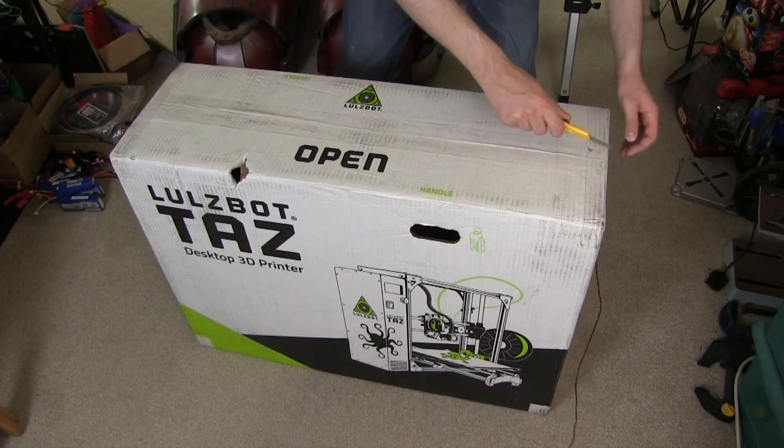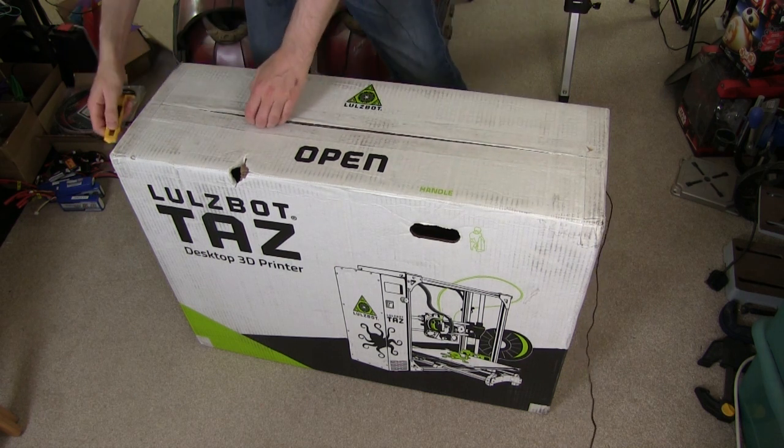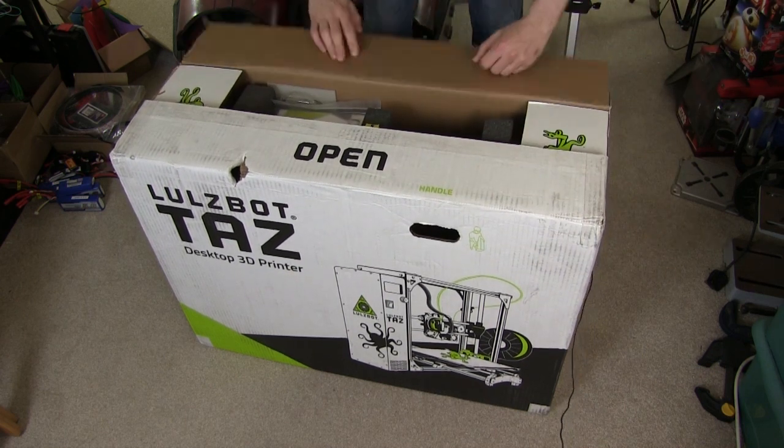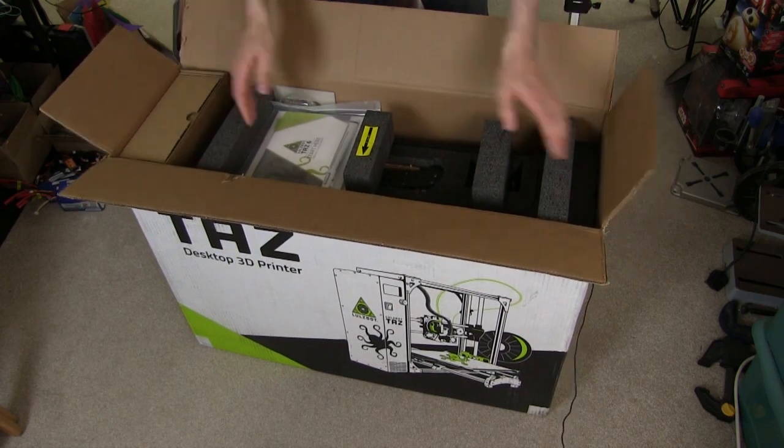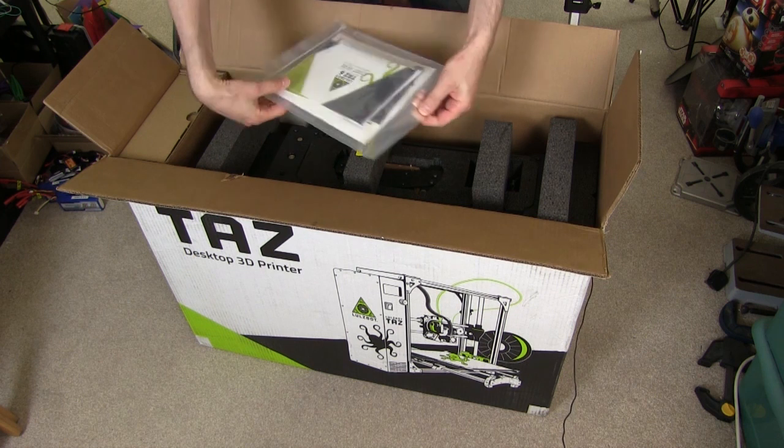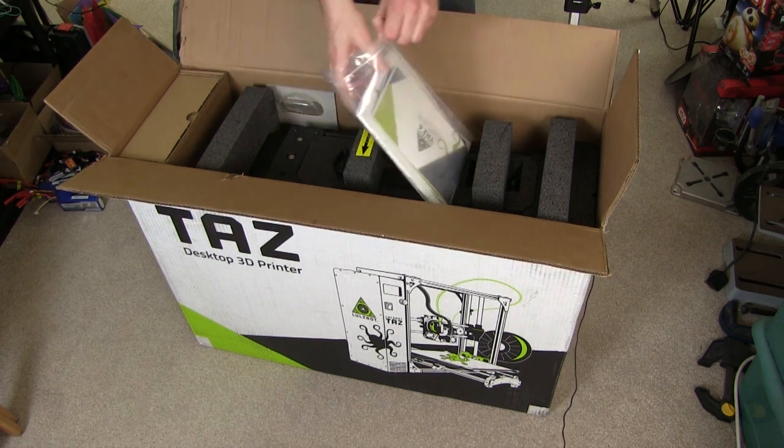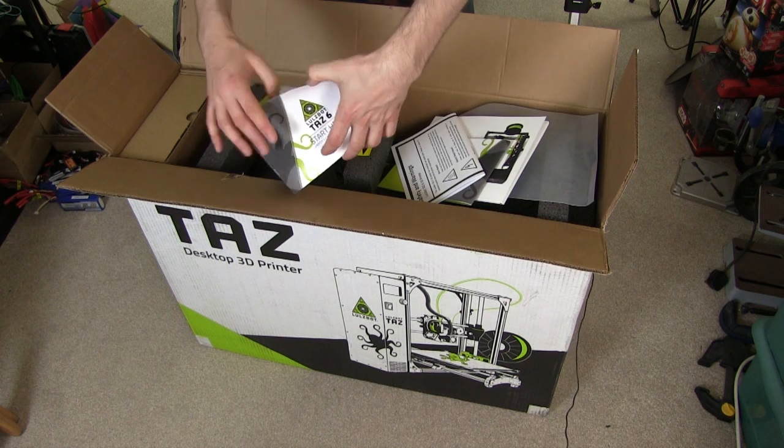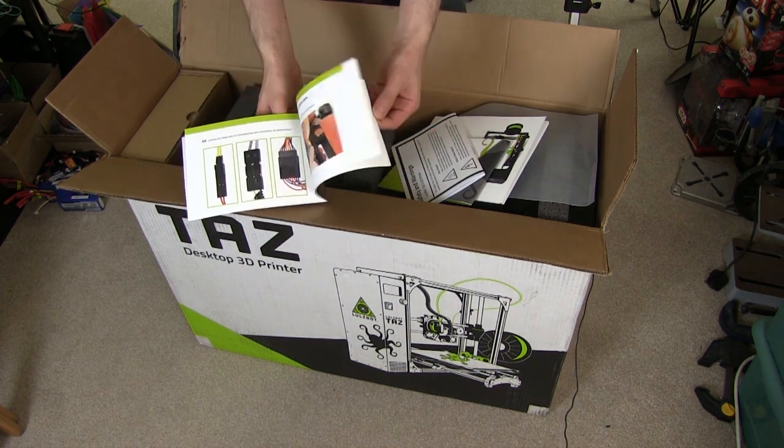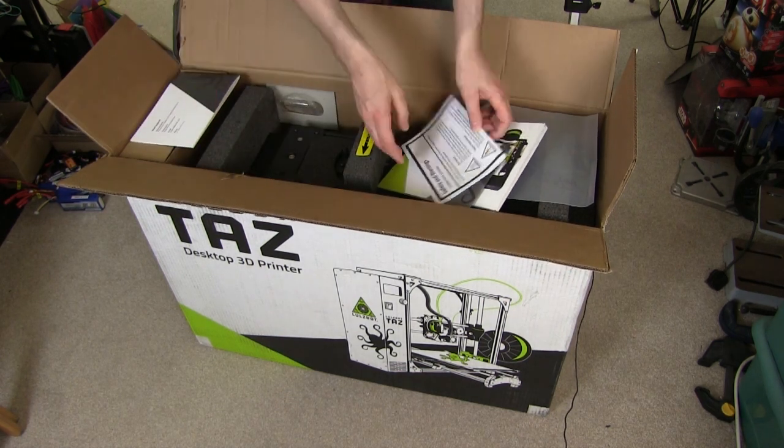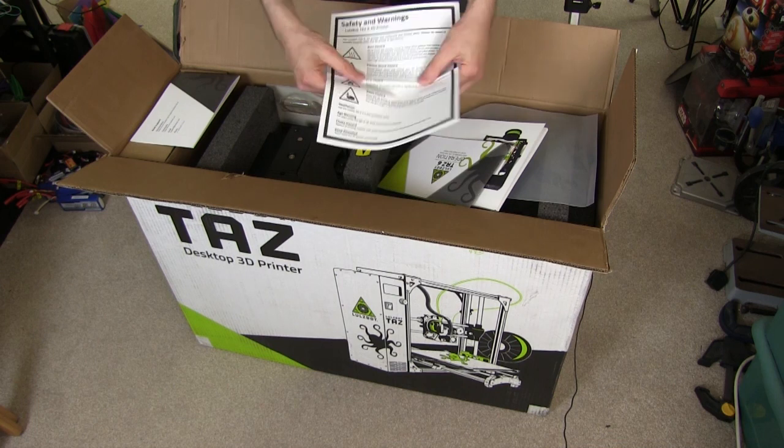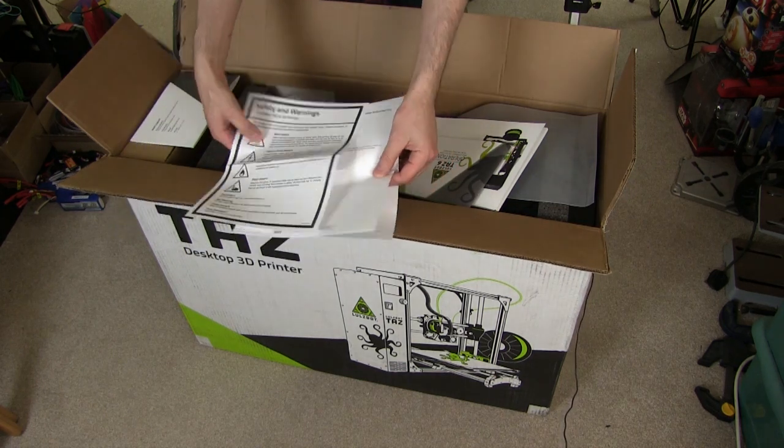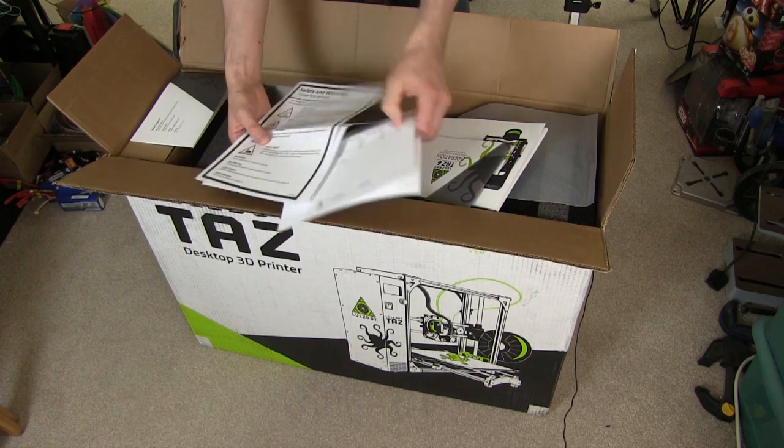Alright, let's see what's in the box. What have we got? As usual, a pack of stuff with a quick start guide in, probably. Let's see what's in there. So we have the Lulzbot TAZ-6 quick start guide, which we'll go through shortly. It tells you about everything to do with unboxing and setting up the printer. This is safety and warnings.